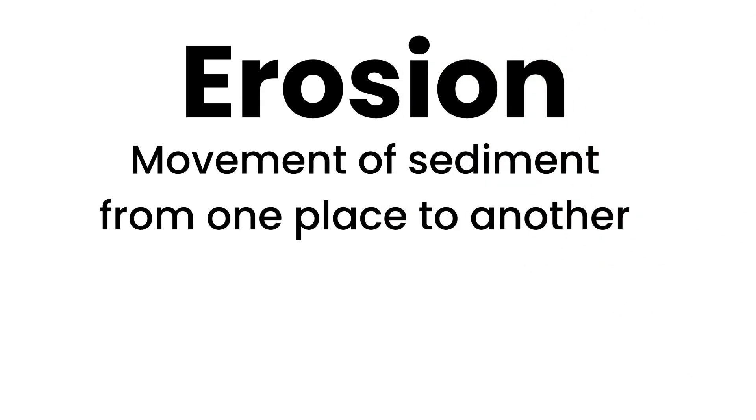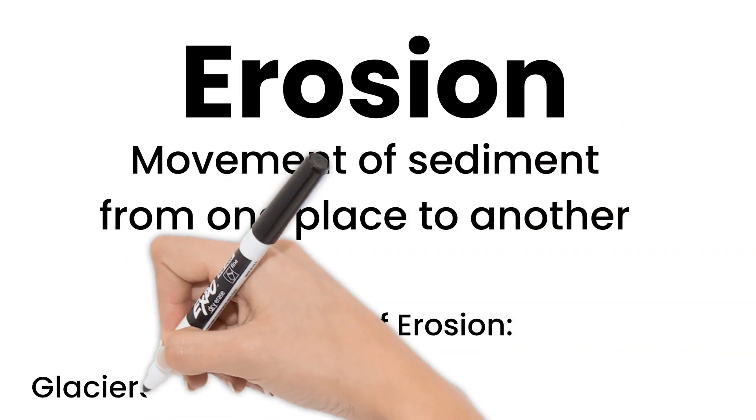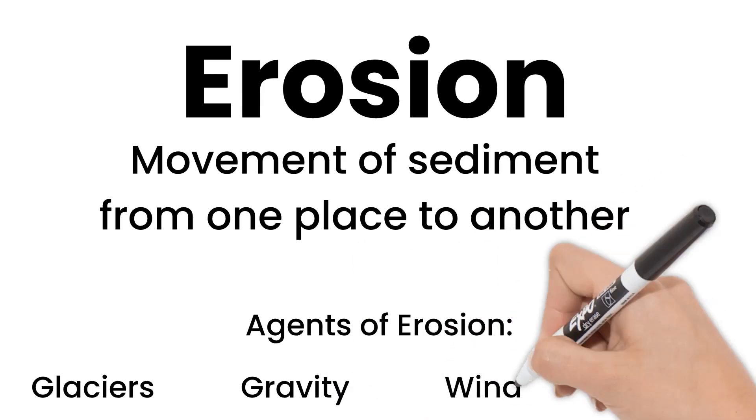There are four main agents of erosion that we'll look at today: glaciers, gravity, wind, and water.